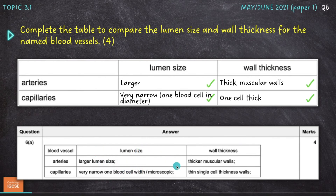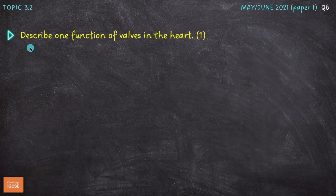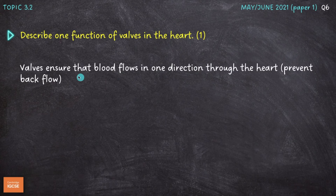Pause the video here if you'd like to compare your answers to that mark scheme. Next question: describe one function of valves in the heart. One mark. Valves ensure that blood flows in one direction through the heart, or in other words, it prevents the backflow of blood.